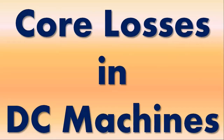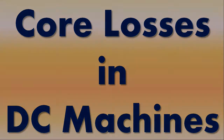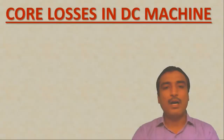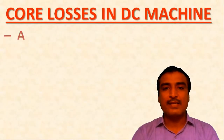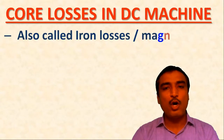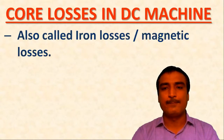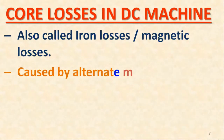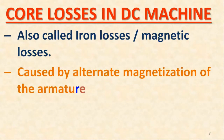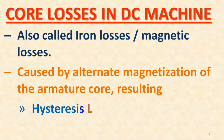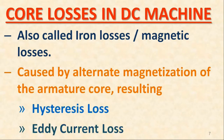Core losses in DC machines: The core losses are also known as iron losses or magnetic losses. These losses result from hysteresis and eddy currents due to alternate magnetization of the armature core material.